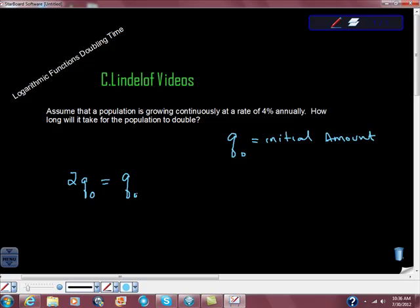I'm just going to use PERT now. I'm going to use PE to the RT for continuous growth. So here's my initial quantity. That's the P.